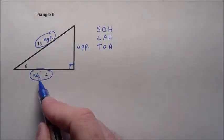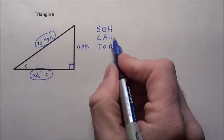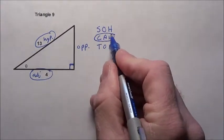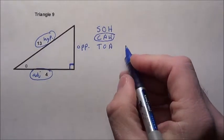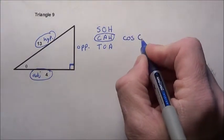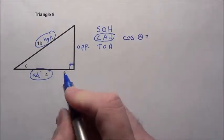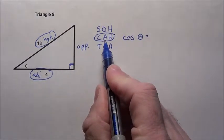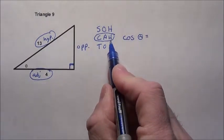Alright, here we go with theta. We have adjacent hypotenuse. That's going to be the little C here. C is the cosine function. So we have the cosine of the angle. Do we know the angle? No. So I just put theta is equal to adjacent side divided by hypotenuse side.